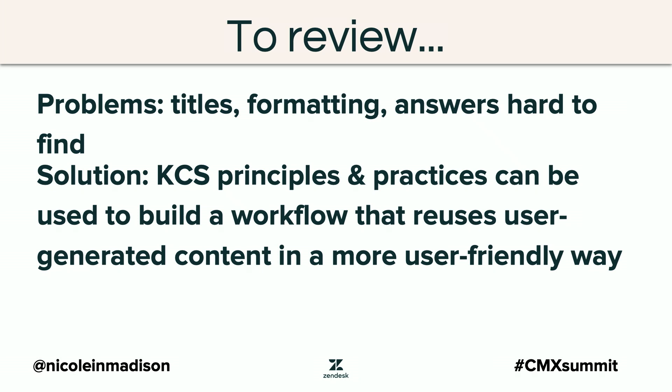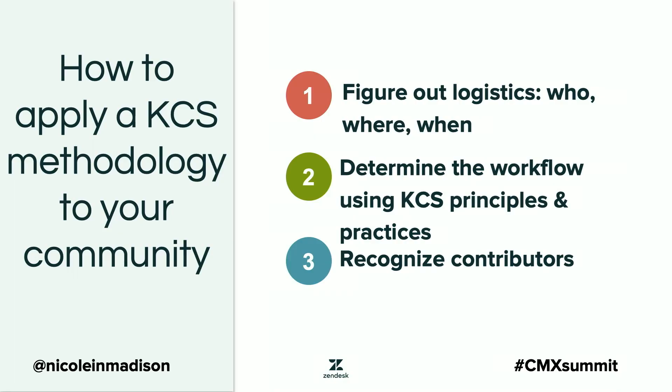So to review, we've covered the three primary roadblocks to users finding information in your community: user-generated titles, poorly formatted posts, and answers that are hard to find because they're buried in or spread across multiple comments. I've given you an example of what we're doing at Zendesk to solve this problem, and we've talked through the principles and practices of the basic KCS methodology. Now let's talk about how you could apply this to your community. Step one, you're going to need to figure out logistics. Who could do this publishing? Is it your community team? Do you have a documentation or other writing team that you can lean on?